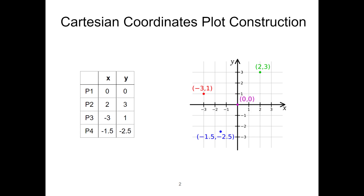Before we describe parallel coordinates, let's refresh our memories in terms of how to construct a Cartesian coordinates plot. The table on the left shows four different points with the two variables x and y. Each point is located on the Cartesian coordinates on the right.